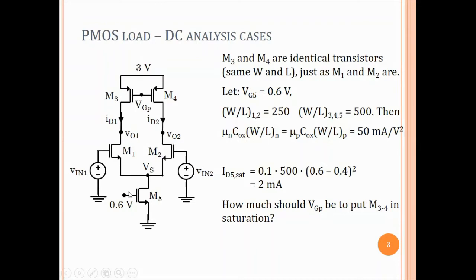VT was 0.4 volts, so this is an overdrive of 0.2. We make W/L of M1 and M2 equal to 250, and W/L of M3 and M4 equal to 500, which is double the nMOS. This means μn·Cox·(W/L) of the nMOS transistors equals μp·Cox·(W/L) of the pMOS transistors, because the W/L is double for pMOS while μp·Cox is half. Both are equal to 50 mA/V², so all four transistors have the same μ·Cox·(W/L).